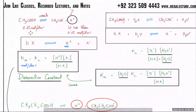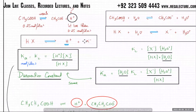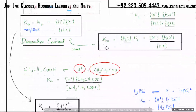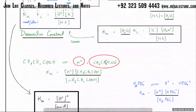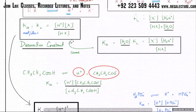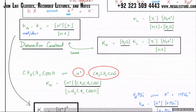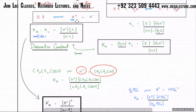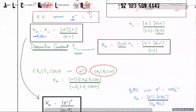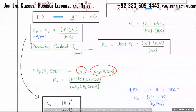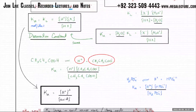Weak acids ionize to produce one H⁺ and one X⁻ ion. So the Ka expression is H⁺ times X⁻ divided by HX. Since these two ions have exactly the same concentration, the expression simplifies: the numerator becomes H⁺ squared. That's your formula.